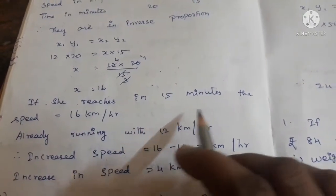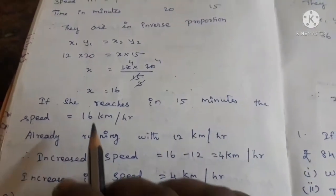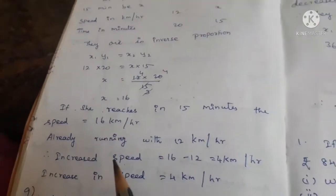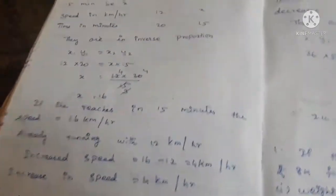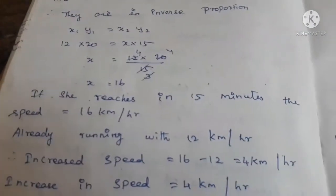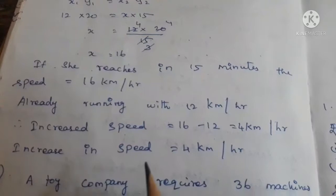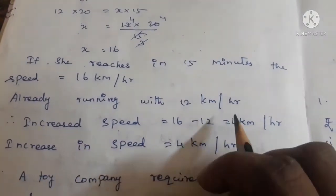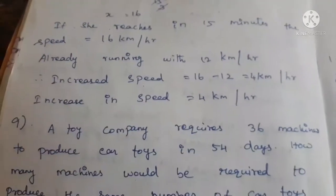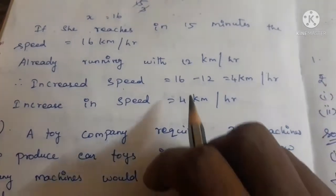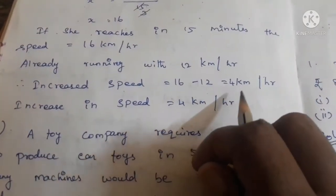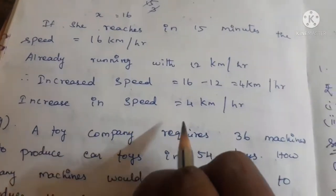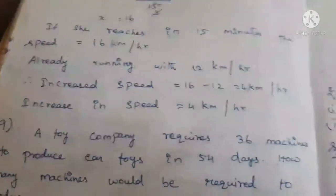If she reaches school in 15 minutes, her speed will be 16 km per hour. She was already running at 12 km per hour. Increase in speed equals 16 minus 12, which is 4 km per hour.